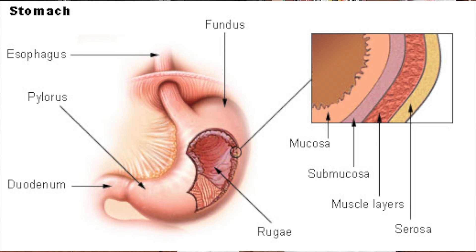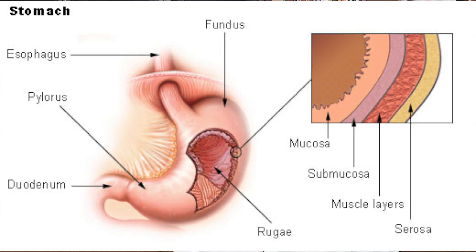Sometimes H. pylori colonizes the pylorus, where there are cells called G cells. G cells synthesize and secrete gastrin, an endocrine hormone that travels to the parietal cells of the fundus and body, stimulating them to synthesize and secrete more and more hydrochloric acid. This results in an overload of hydrochloric acid, along with changes in nitric oxide production.